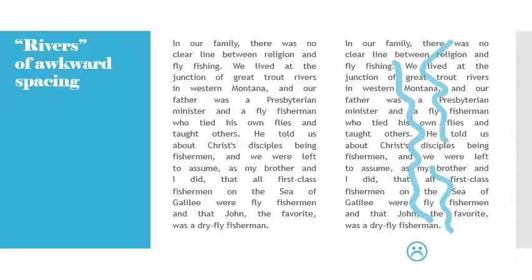While kerning and tracking are about creating more readable text, the overuse of letter spacing can make characters feel disjointed. Additionally, if the tracking of a body of text is too loose, odd empty spaces between words can form — and this is called rivers. This is especially true when working with justified text. These awkward spaces are called rivers and you can see where the name comes from: it looks like big white negative-space rivers flowing through the body of text, distracting the reader and making it very hard to read.